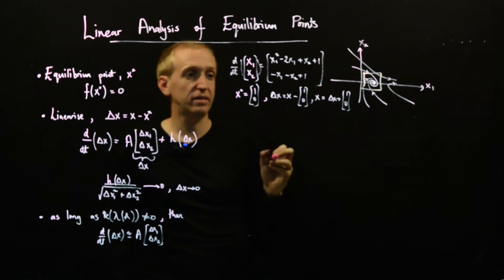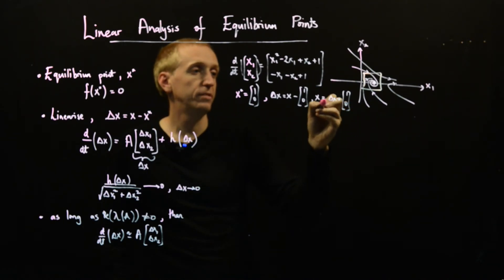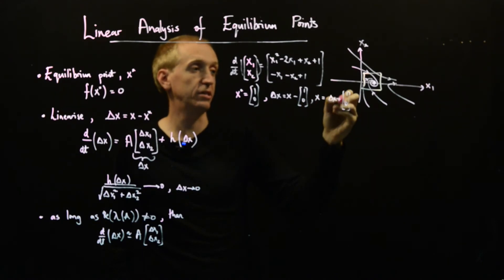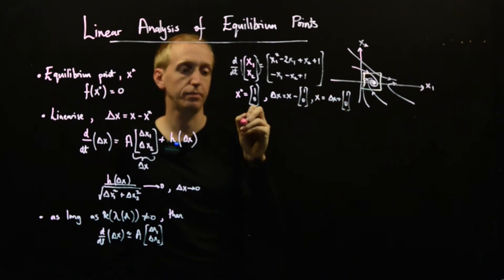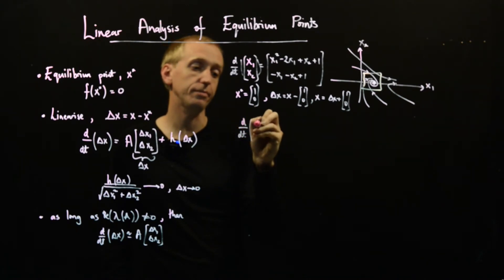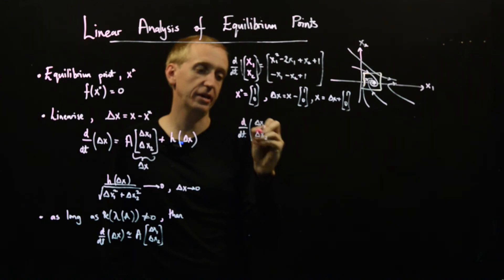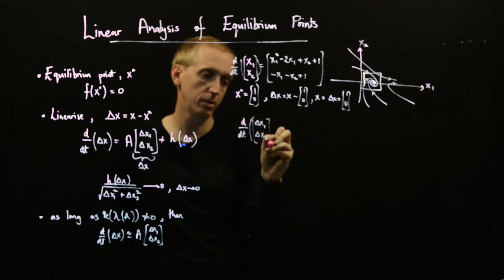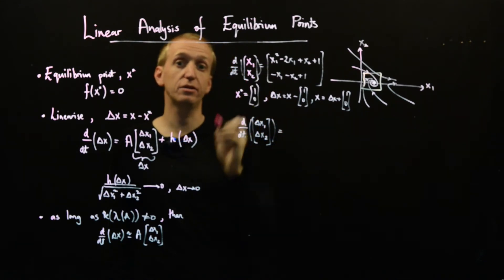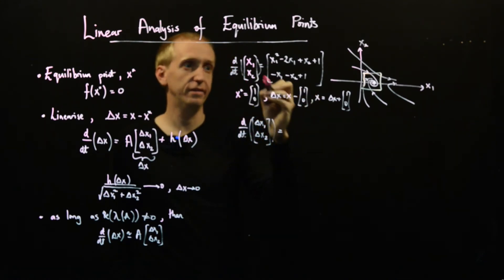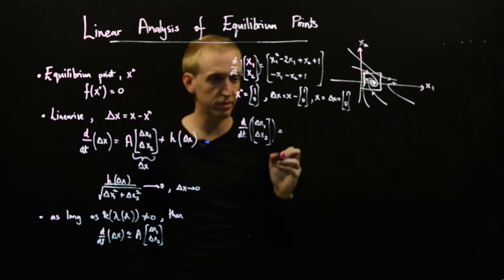When we substitute this in here we get x dot equals zero, which is precisely what we need. So delta x is equal to x minus x star which is just x minus 1, 0, or equivalently x is equal to delta x plus 1, 0. And we'll now just use this equation to eliminate x1 and x2 and rewrite it in terms of our new variable delta x1, delta x2. So what do we get? Well, d by dt of x is equal to d by dt of delta x since this is just a constant.